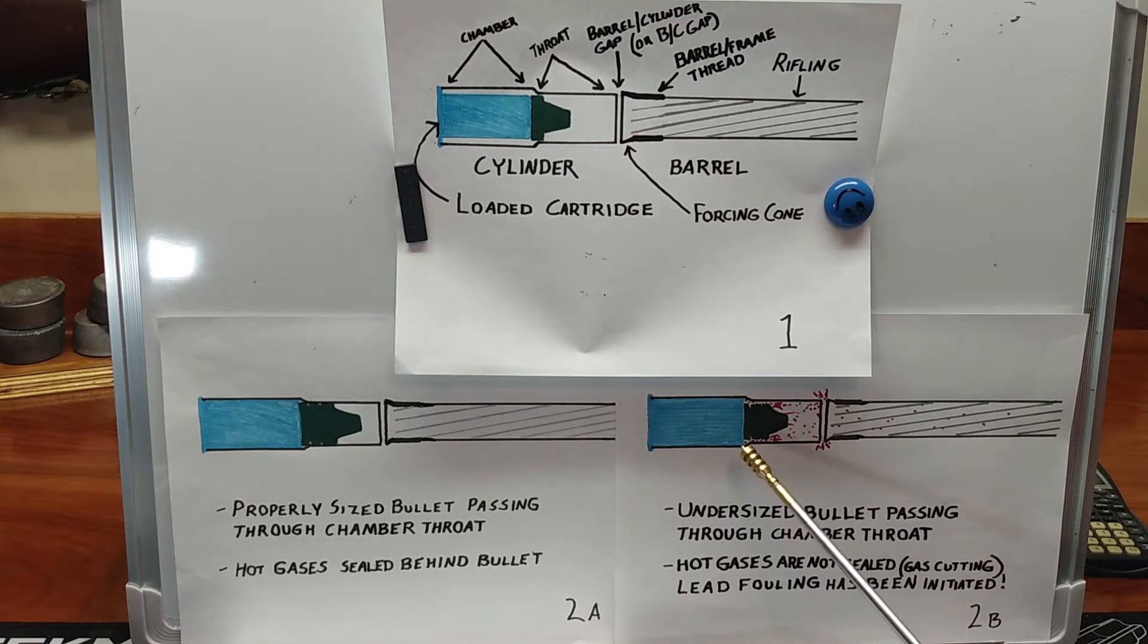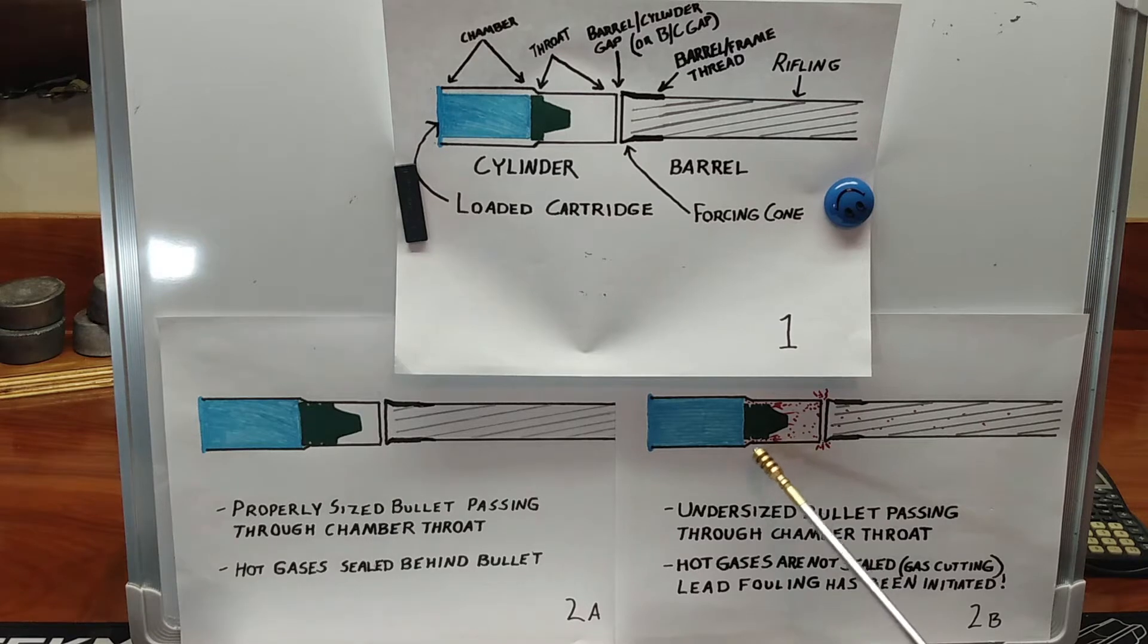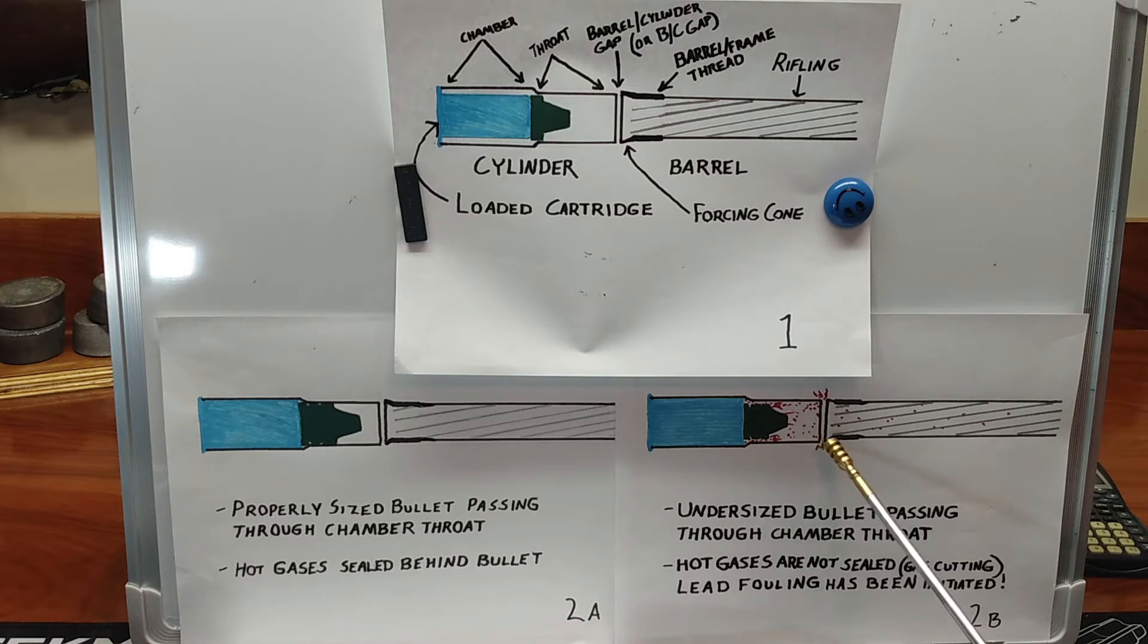But over here, what do we have? We have an undersized bullet. This undersized bullet is making its way out of the case and it might even go into the barrel kind of straight or straight enough, but there's a good chance it's not. And even worse, folks, let's look at all this red right here. I did the best I could to show what it will look like when the hot gases shoot ahead of the bullet.